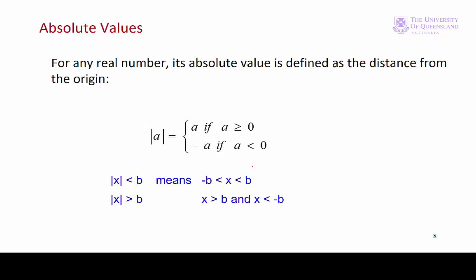We can combine absolute values with inequalities. Here we have the absolute value of x is less than some value of b. We can interpret that as meaning that x is greater than minus b but less than b. On the other hand if we have the absolute value of x is greater than b that means x is greater than b and x is less than minus b.